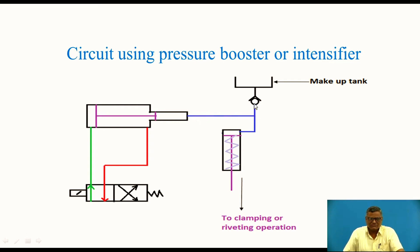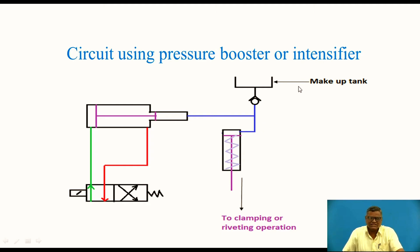The high pressure oil goes through a check valve and then to a single-acting, spring-return cylinder. The high pressure oil enters the cylinder, exerting high pressure on the piston, so the piston applies a larger force for the clamping or riveting operation. This is one of the applications of the pressure booster or intensifier in the hydraulic circuit.